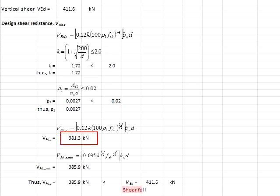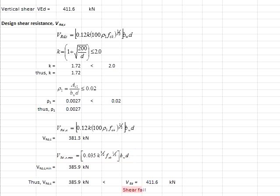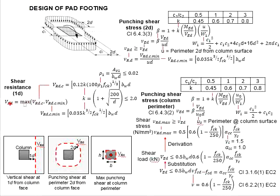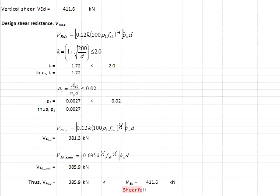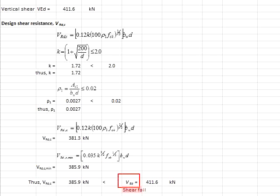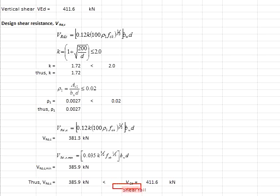You get a shear resistance of 381.3 kN. The minimum shear resistance, calculated from the separate formula substituting K, gives 385.9 kN. Your design shear resistance is the larger of the two values, which is 385.9 kN. Comparing with VEd, you realise that your resistance is actually less than the applied load — meaning the section will fail in shear.